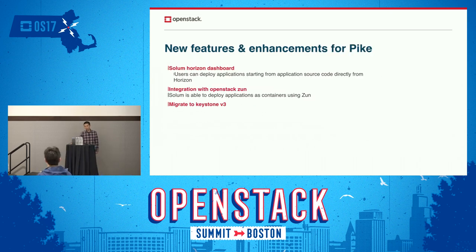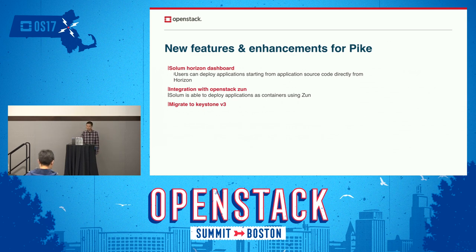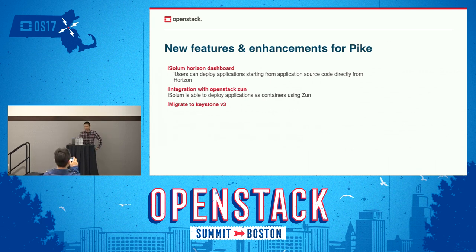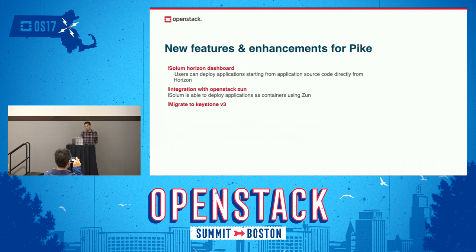I will introduce the new features and enhancements for the Pecan release. The first is the Solom Horizon Dashboard — users can now deploy applications starting from application source code directly from Horizon. Next is integration with OpenStack Zun, which is a container service. We replaced Nova-Docker with Zun, and we have also migrated from Keystone v2 to Keystone v3.